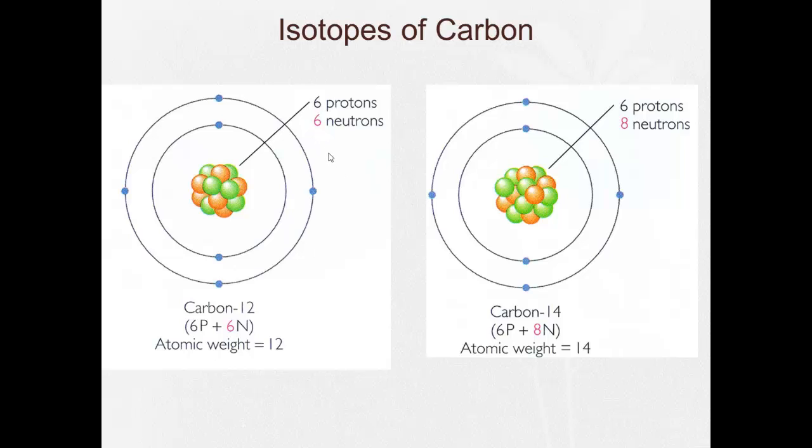All right, so here's a picture example we can take a look at. Here, carbon-12 has six protons and six neutrons with a mass of 12 AMU.